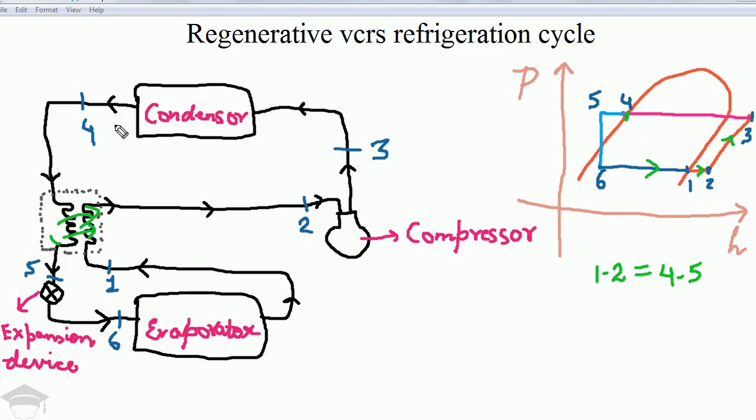From 3 to 4, this point is 4, saturated liquid line. Heat is rejected in the condenser. From 4 to 5, it is the subcooling. Subcooling is in the regenerator from 4 to 5. That means this region is the subcooling, and this region is the superheating.